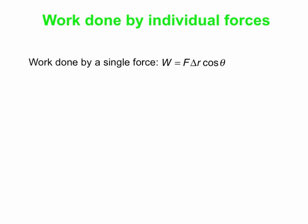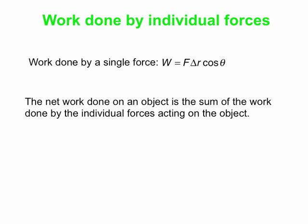Now we've talked about the work done by the net force — what about work done by individual forces? You can figure out the work done by a single force by just removing the 'net' subscript from our equation. Work by any individual force is the magnitude of that force multiplied by the magnitude of the displacement, multiplied by the cosine of the angle between the force and displacement vectors. And the net work done on an object is the sum of the work done by all the individual forces that act on that object.